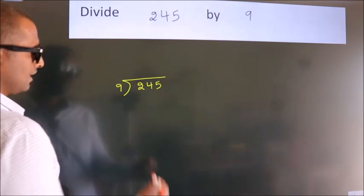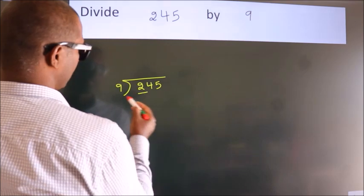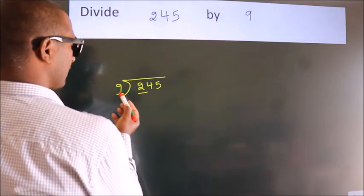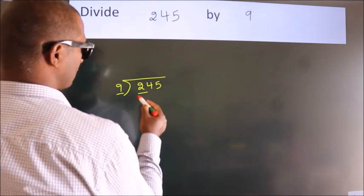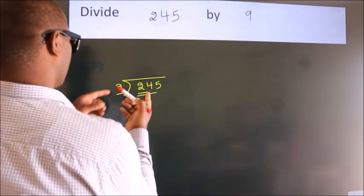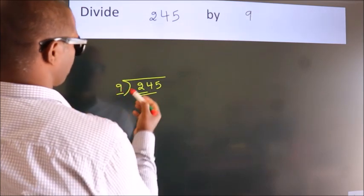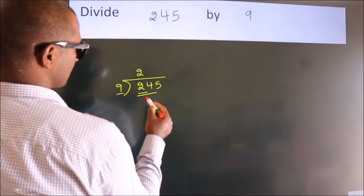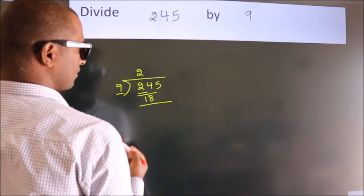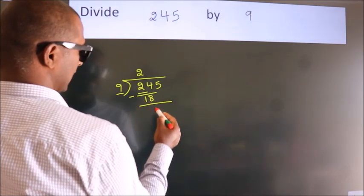Next. Here we have 2. Here 9. 2 is smaller than 9, so we should take 2 numbers. 24. A number close to 24 in the 9 table is 9 times 2 is 18. Now we should subtract. We get 6.